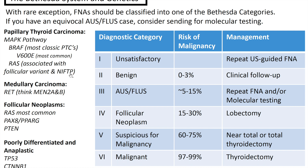Some genetics: for PTC, this is the MAP kinase pathway. BRAF V600E mutation is the most classic for PTCs. RAS is associated with the follicular variant of PTC and with NIFTP. For medullary carcinoma, remember it has a mutation in RET — think MEN2A and MEN2B. For follicular neoplasms, RAS is most common, along with PAX8/PPARG and PTEN. PTEN is also associated with Cowden syndrome — just a fun fact.